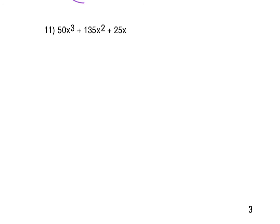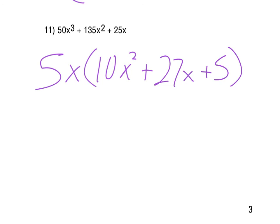And number 11 looks like we've got a common factor here. We can take out a 5x for this one. It gives us 10x² plus 27x plus 5. Let's see, no special pattern there. So we're just looking at factoring this. So we look at our factors for 10 being 1 and 10, 2 and 5. And the factors for 5 just being 1 and 5.